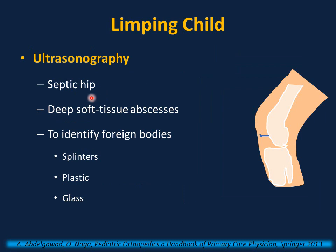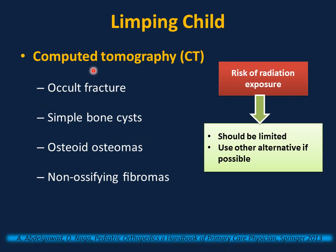Ultrasonography is an excellent study for septic hip, deep soft tissue abscesses, and to identify foreign bodies such as splinters, plastic, or glass. CT scan can be helpful in cases of occult fracture, simple bone cysts, osteoid osteomas, and non-ossifying fibromas. It is very important to know the risk of radiation exposure when ordering a CT scan for a child — it should be limited and used only when truly needed with no other options available.